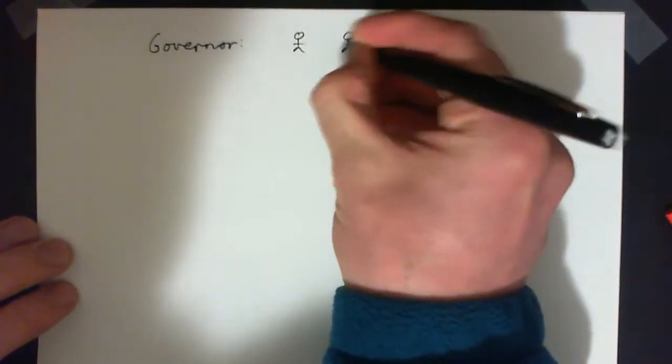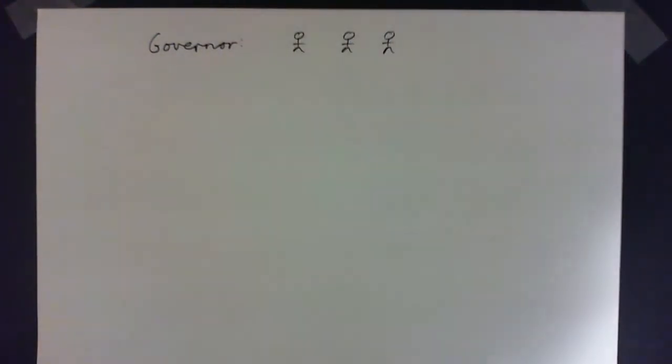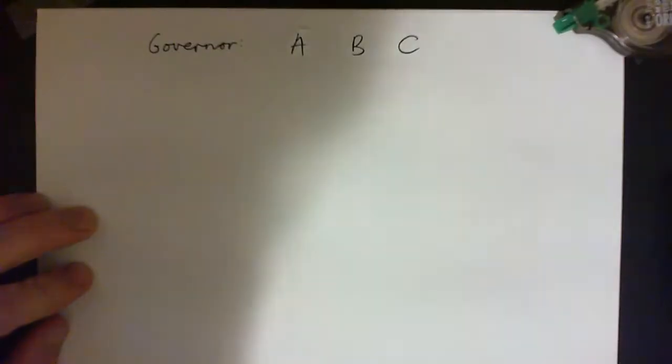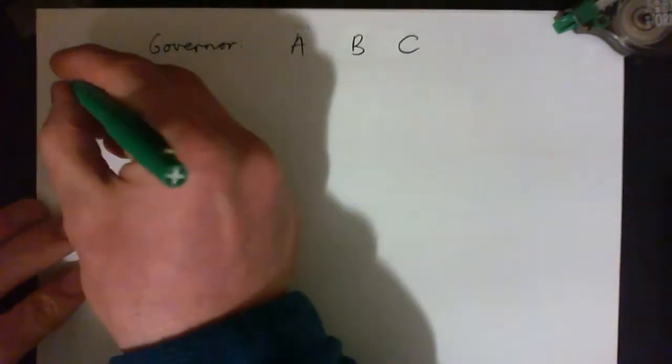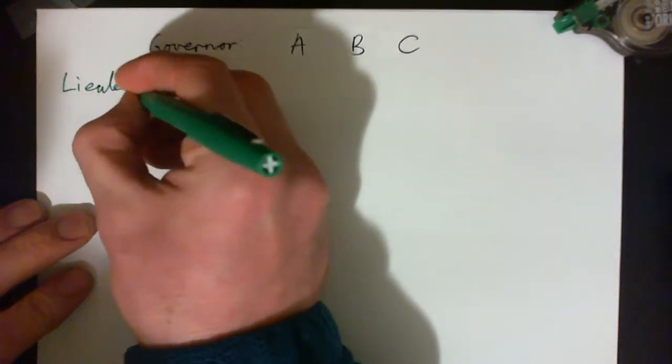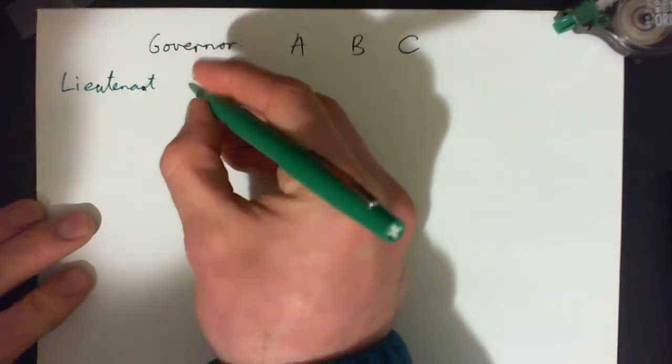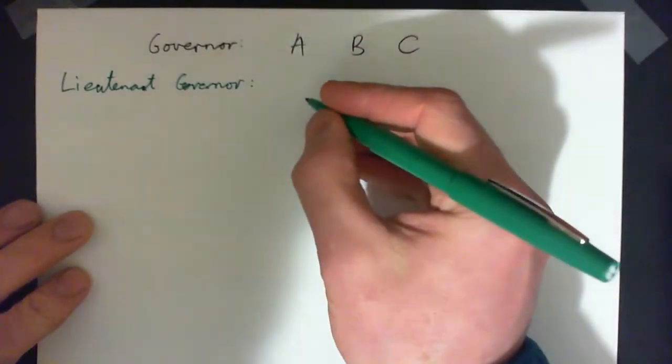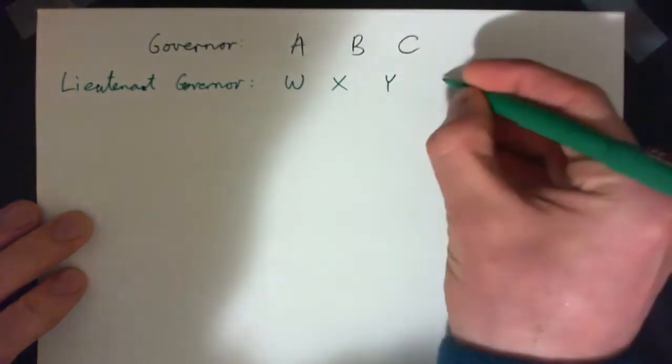Okay, so I'm just going to start with the first two offices. Maybe simplify this problem just a little bit. So for governor, there are how many people running? Three. Here they are. Actually, I should have called them A, B, C. Candidate A, candidate B, candidate C. That would be better. Then we've got lieutenant governor. And we'll call these candidates W, X, Y, and Z.